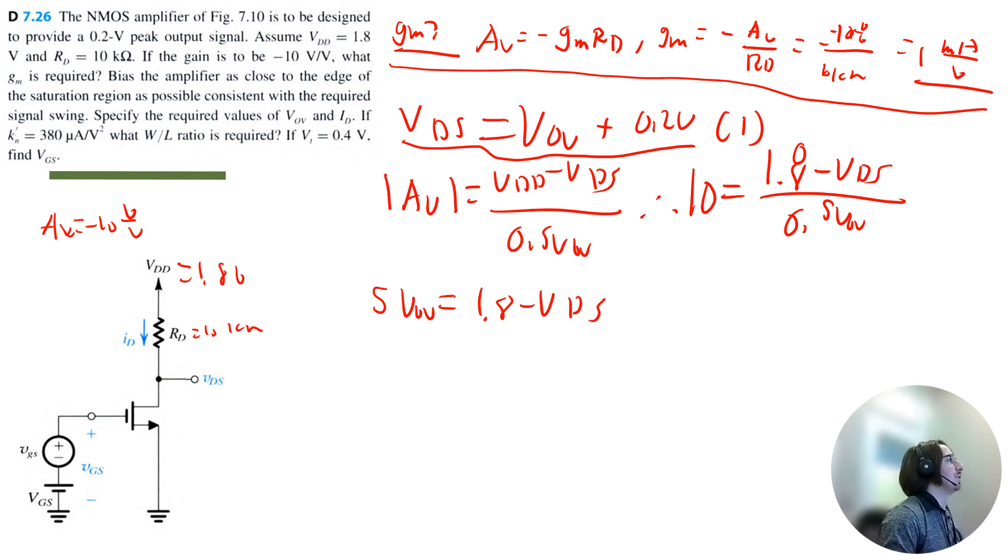And let's isolate VDS. So that would be VDS equals 1.8 minus 5 V overdrive. So this will be equation two. So we can solve for V overdrive now. V overdrive plus 0.2 equals 1.8 minus 5 V overdrive.